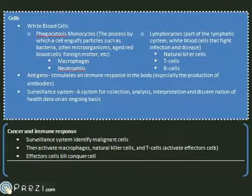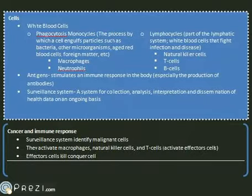Lastly, cytokine and interleukin are used to prolong the life of T cells. The cancer and immune response is the process in which the surveillance system identifies malignant cells and activates the four key effector cells to conquer the identified malignant cells.